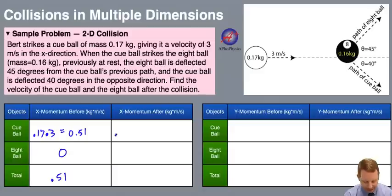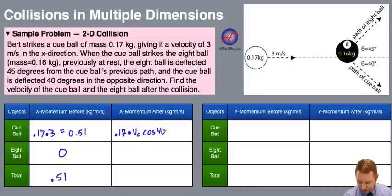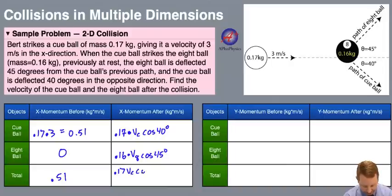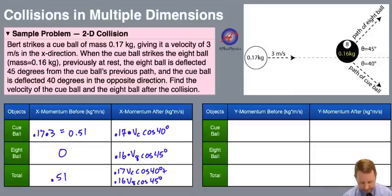After the collision, we still have the same mass for the cue ball, 0.17 kilograms, but now it's times the unknown velocity of the cue ball, and since it's the x component, it's times the cosine of 40 degrees. For the 8 ball after the collision, its mass is 0.16 kilograms, times v8 cosine 45 degrees. So our total momentum after the collision is 0.17 vc cos 40 degrees plus 0.16 v8 cos 45 degrees.